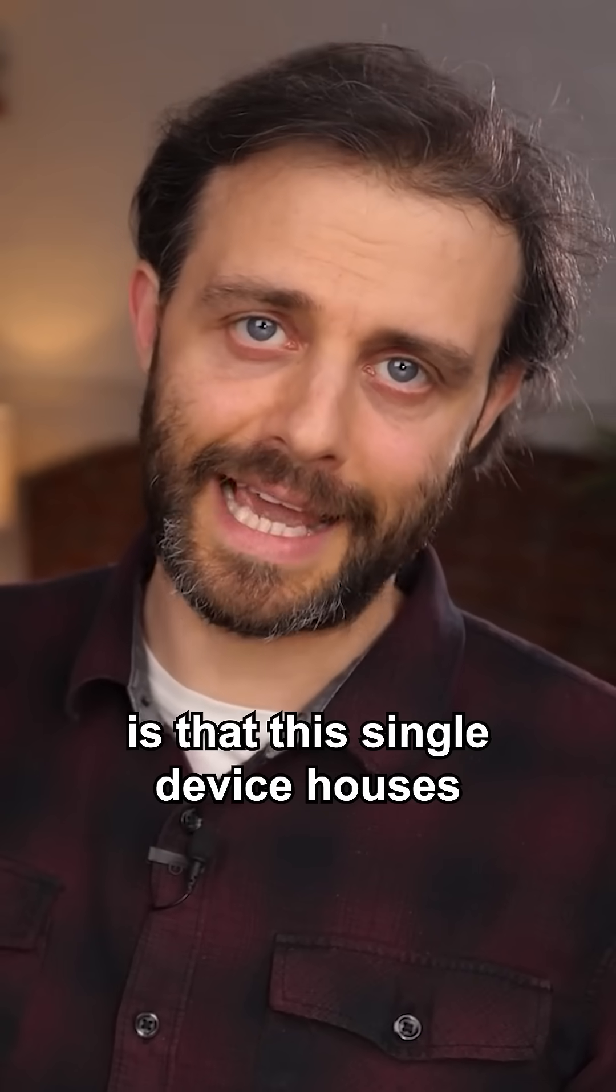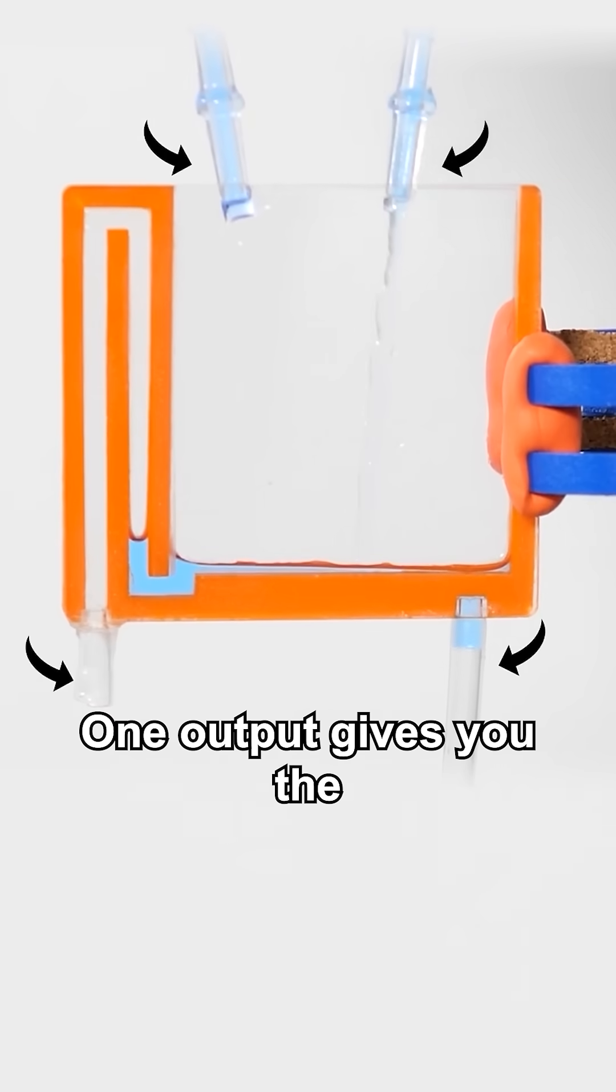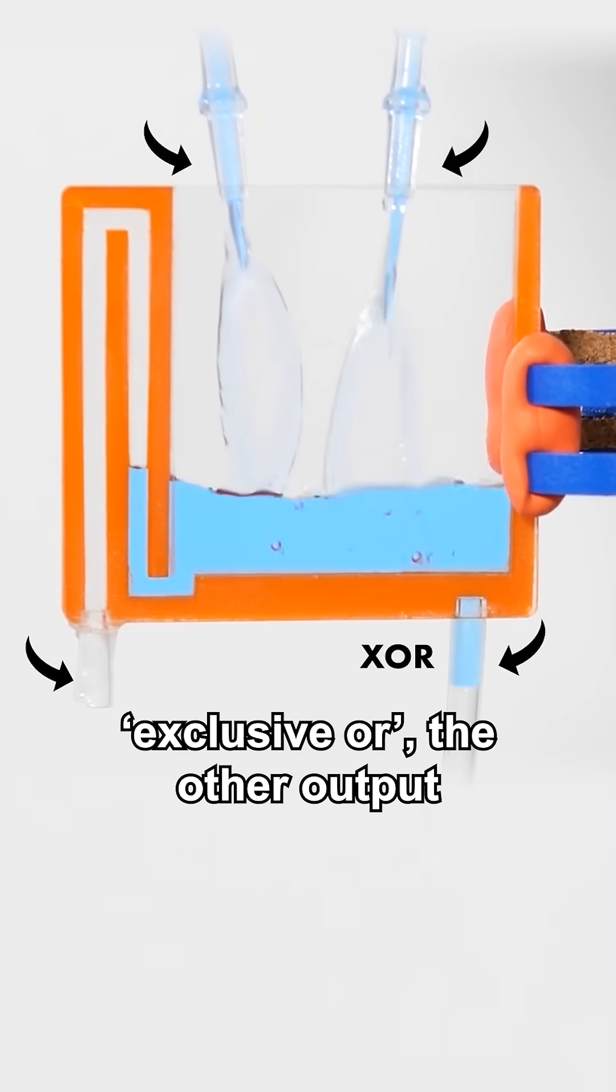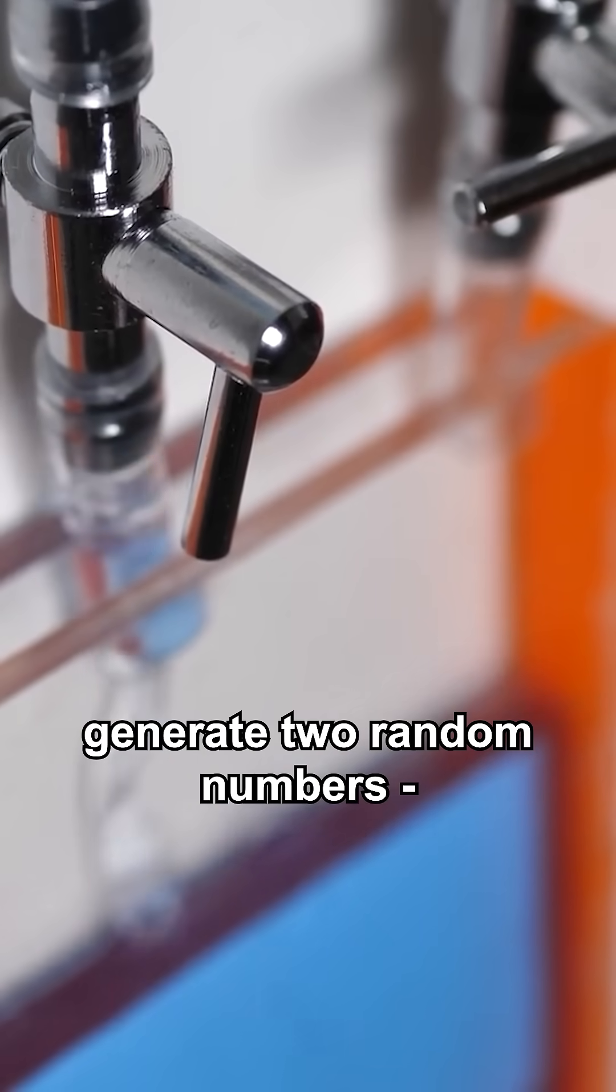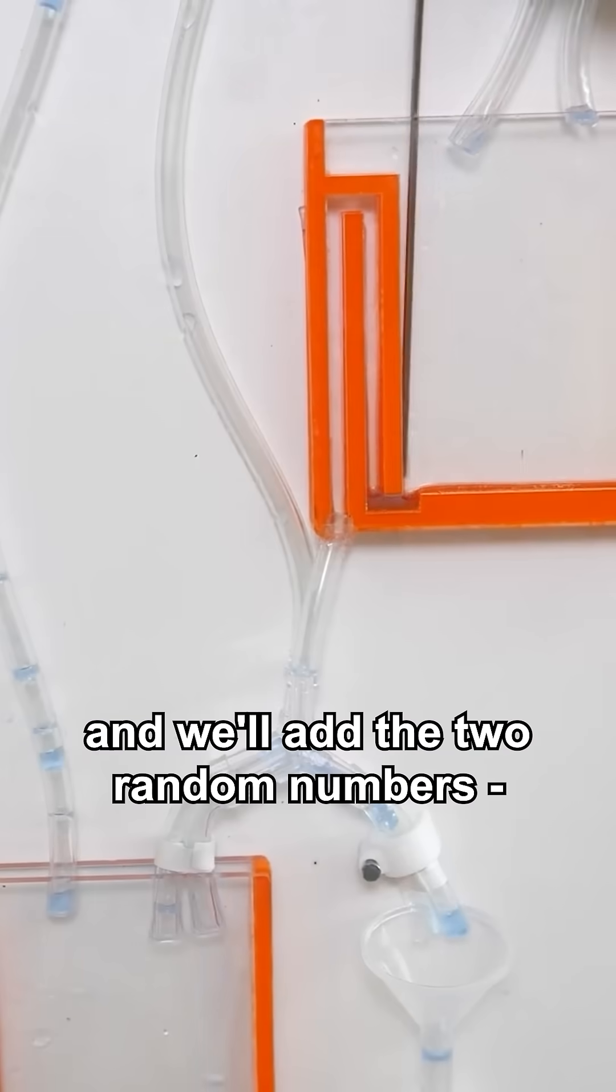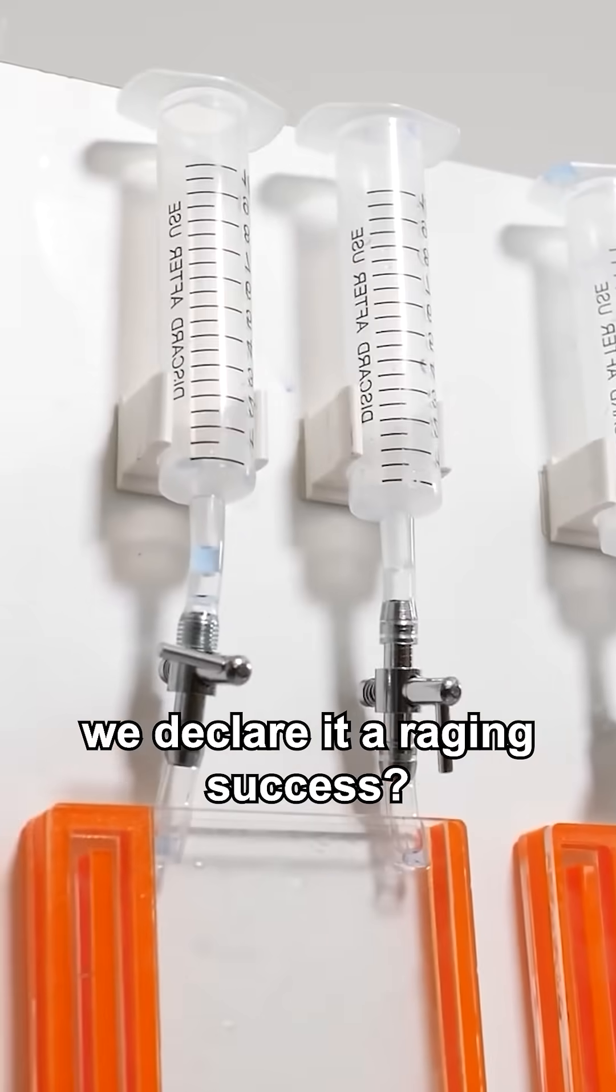One thing that's nice is that this single device houses two gates. You've got two inputs and two outputs. One output gives you the exclusive or, the other output gives you the AND. What if we generate two random numbers and we'll add the two random numbers so we have no way to influence this. And if that works, we declare it a raging success.